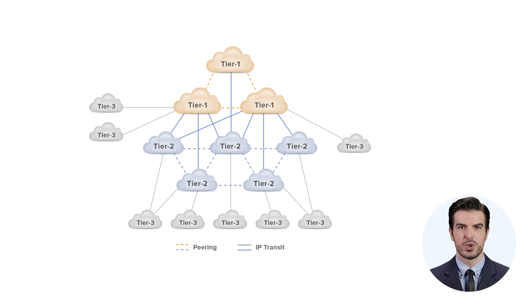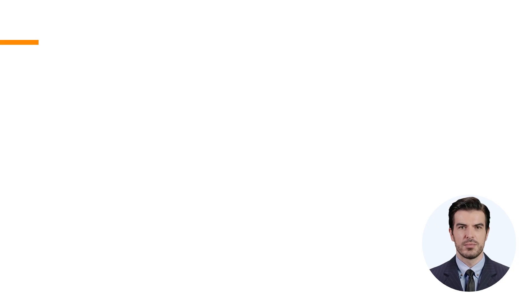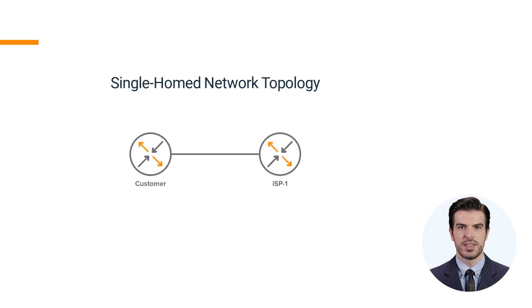Traffic from a lower-tier ISP to a higher-tier provider is called going upstream; similarly, traffic from the internet destined to the lower-tier ISP is called going downstream. The most straightforward design is single-homed, where the customer has a single upstream connection. The ISP only announces a default route to the customer, and BGP is not needed because there is only one exit path to the internet.